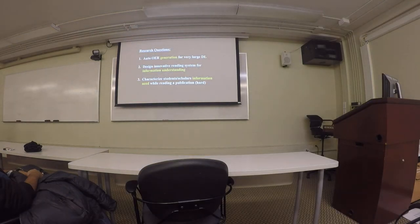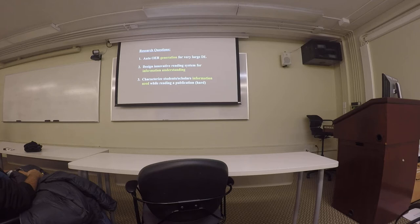The second is how to design an innovative reading and learning environment for information understanding. And the third is how to automatically calculate a student's or scholar's information need while reading a publication. The third one can be really hard, but the first two are relatively easier.